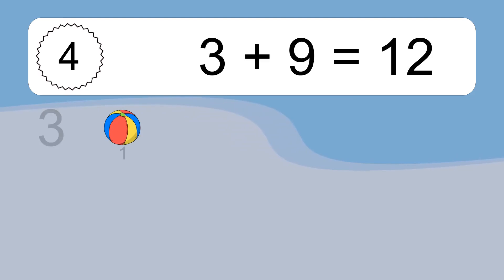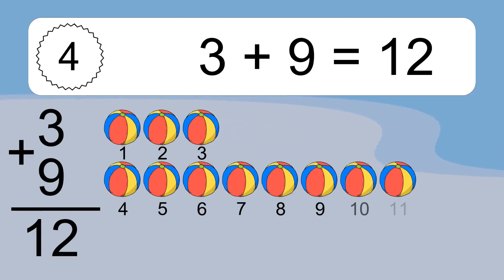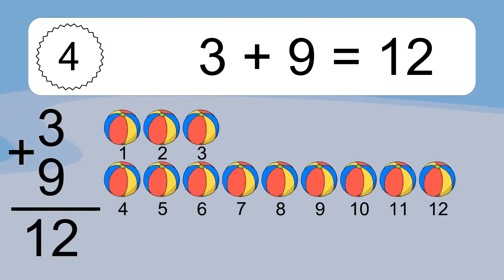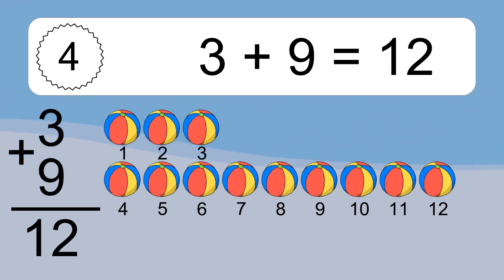3 plus 9 equals what? 3 plus 9 equals 12. Let's count it: 1, 2, 3, 4, 5, 6, 7, 8, 9, 10, 11, 12.